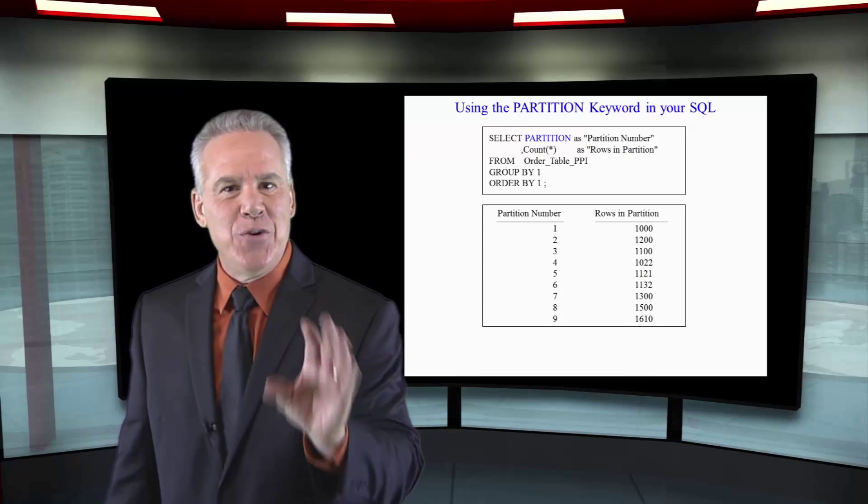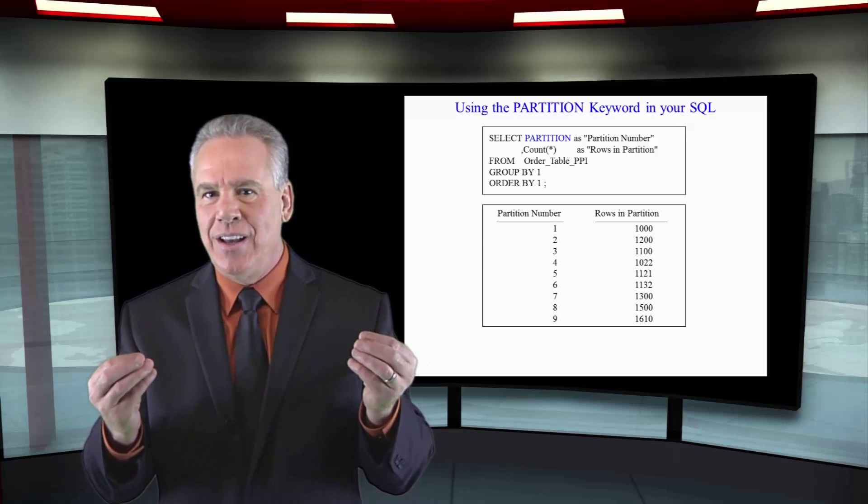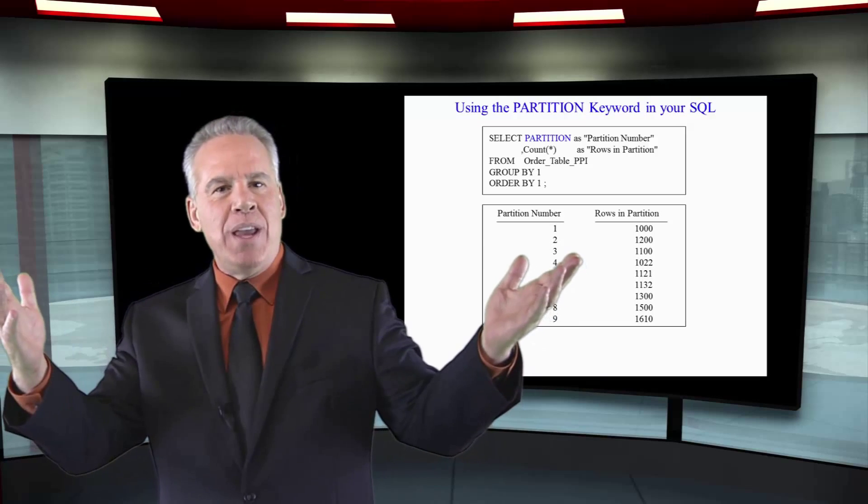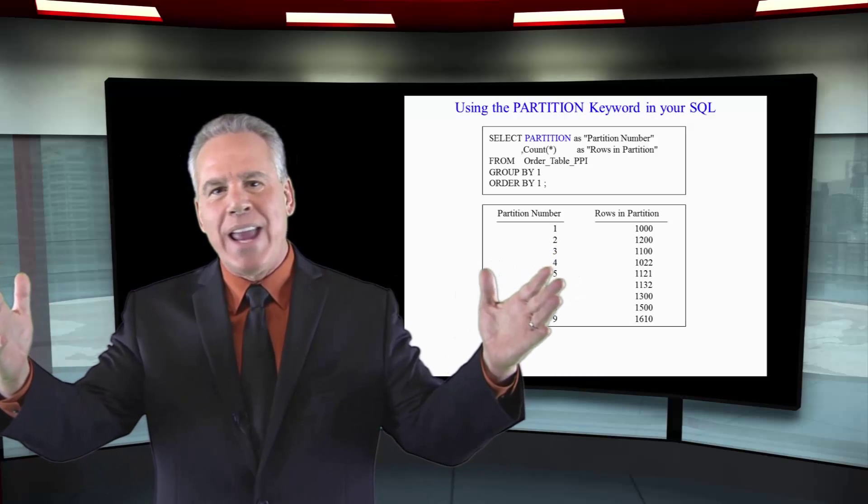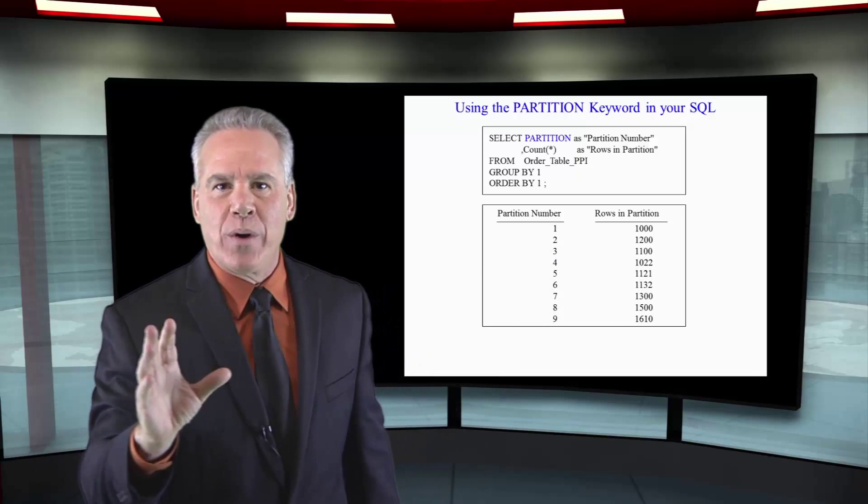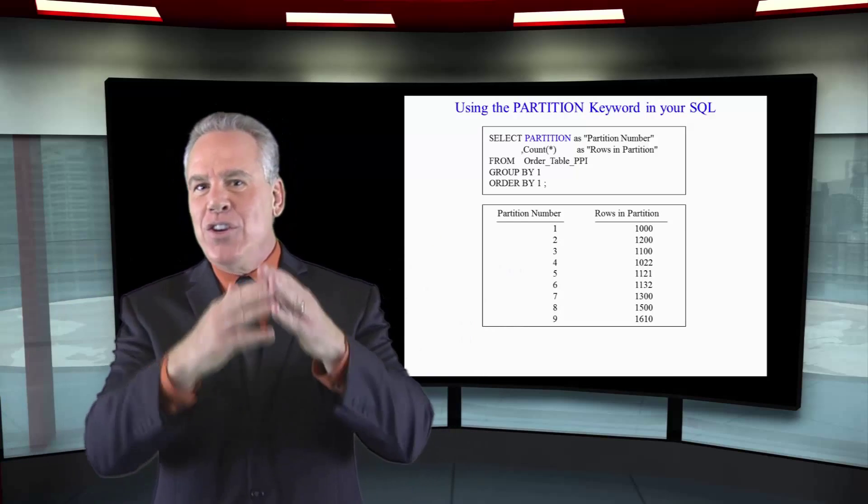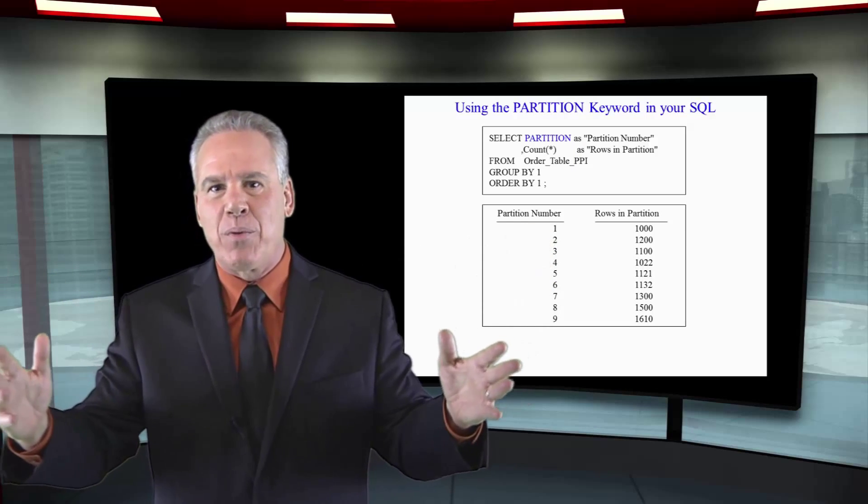Here's a query that you can run to see how many rows are in each particular partition. You may say, hey, we started in January, we had 10,000 orders. In February, we had 100,000 orders. So if you're partitioning by month, you're going to see a lot more rows in different partitions.